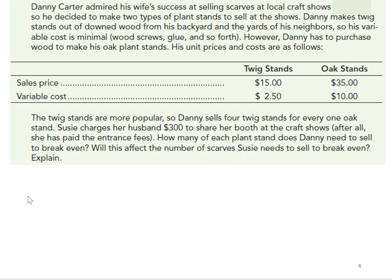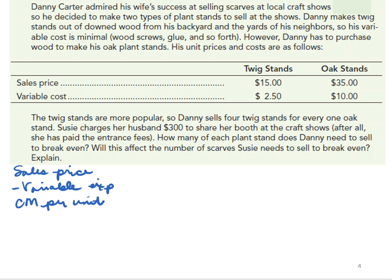Let's go ahead and look at the contribution margin per unit for the two types of plant stands. The contribution margin is the sales price per unit minus the variable expenses. For the twig stand, that's $15 sales price minus the $2.50 variable cost, so the contribution margin per unit for the twig stand is $12.50.